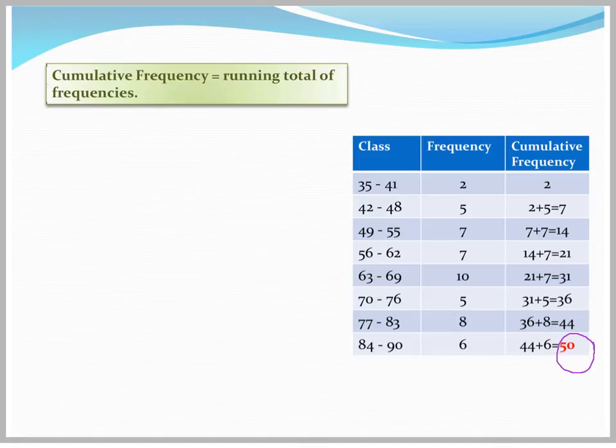So what does this cumulative frequency tell me? This tells me, let's say, I look right here in this row. This tells me that 31 people were in the 63 to 69 class. So 31 or fewer were in that class. So it's a really quick way for me to look and see how many people were above or below that class.